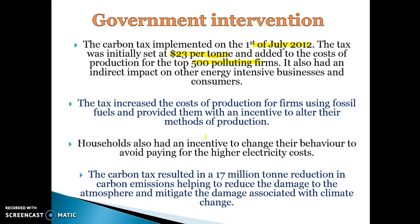Households, now facing a higher relative price for carbon, shifted their energy consumption toward more renewable energy sources to avoid higher electricity costs. More resources shifted to cheaper renewable energy, resulting in a 17 million tonne reduction in carbon emissions. The idea was to reduce damage to the atmosphere, mitigate climate change, and help preserve the common access resource of stable weather patterns.